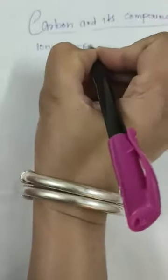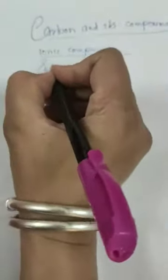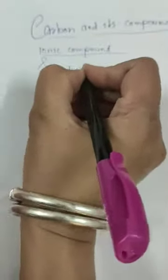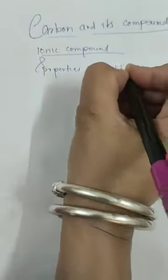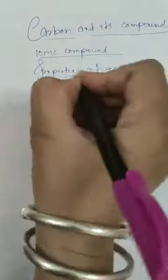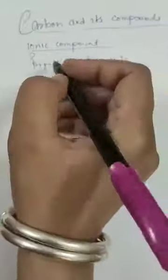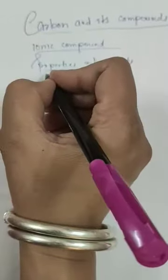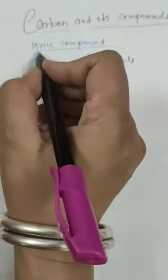We have studied the properties of metals in the last chapter — and which compounds are formed: ionic compounds.